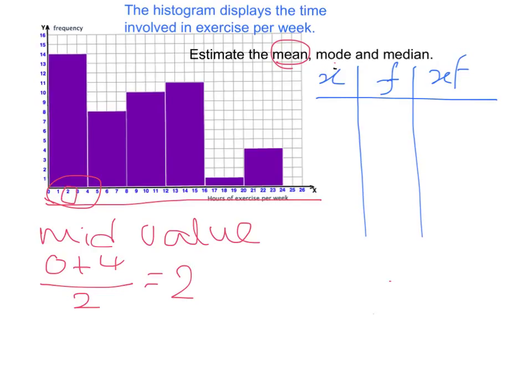Then the next is 6, and then 10, 14, 18, and 22. So I'm going to write this down. So the x here represents our mid interval.